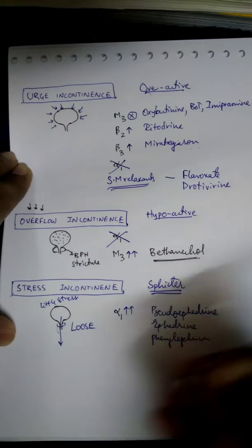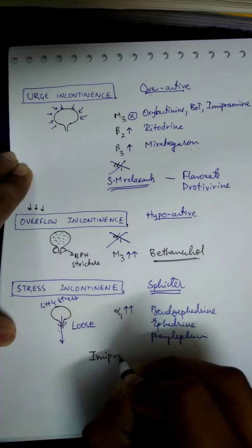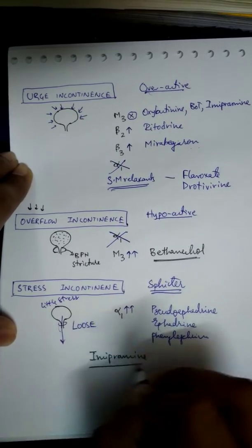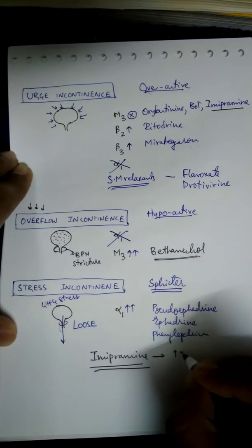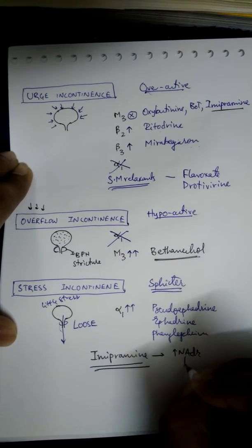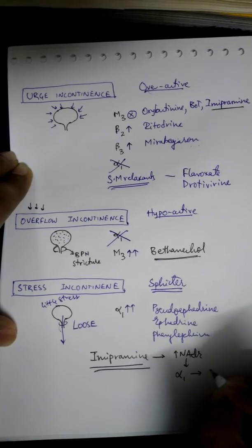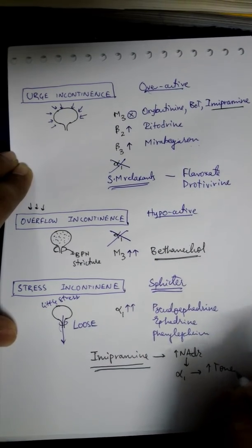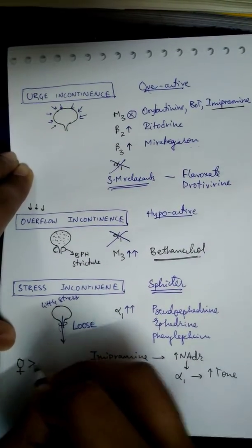There is also another treatment modality with imipramine. Here imipramine is an antidepressant which increases noradrenaline, which further acts on alpha 1 and increases its tone. This stress incontinence is more common in females than males.